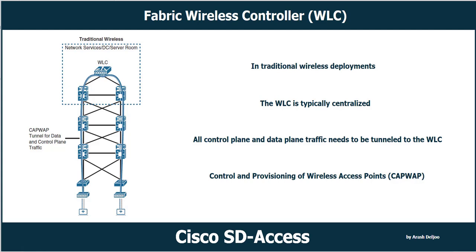As a review, in traditional wireless deployment the wireless LAN controller is typically centralized, and all control plane and data plane traffic — meaning wireless client data traffic — needs to be tunneled to the wireless LAN controller through the CAPWAP tunnel. However, in Cisco SD Access fabric there are some differences.